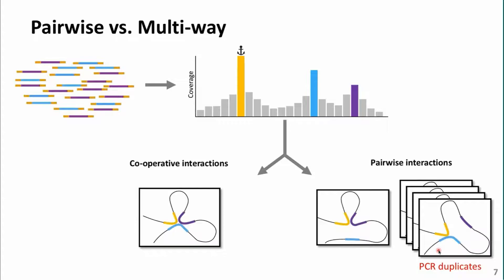We also need to consider that PCR duplicates are going to change the frequency of observed fragments. Interactions between yellow and blue might be amplified multiple times, while interactions between purple and yellow are not amplified as much. This changes the ratio of observed interactions, and that is problematic.